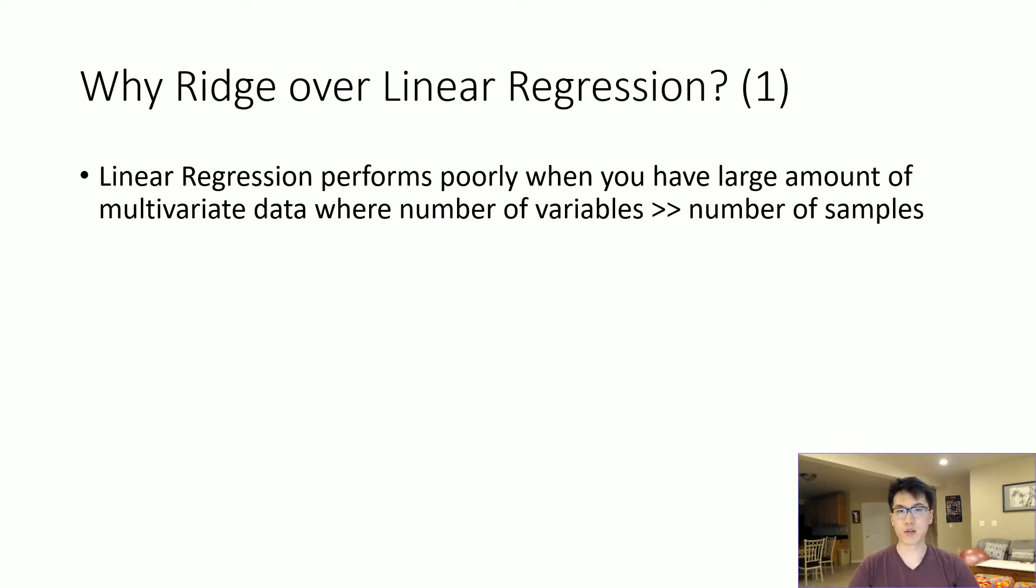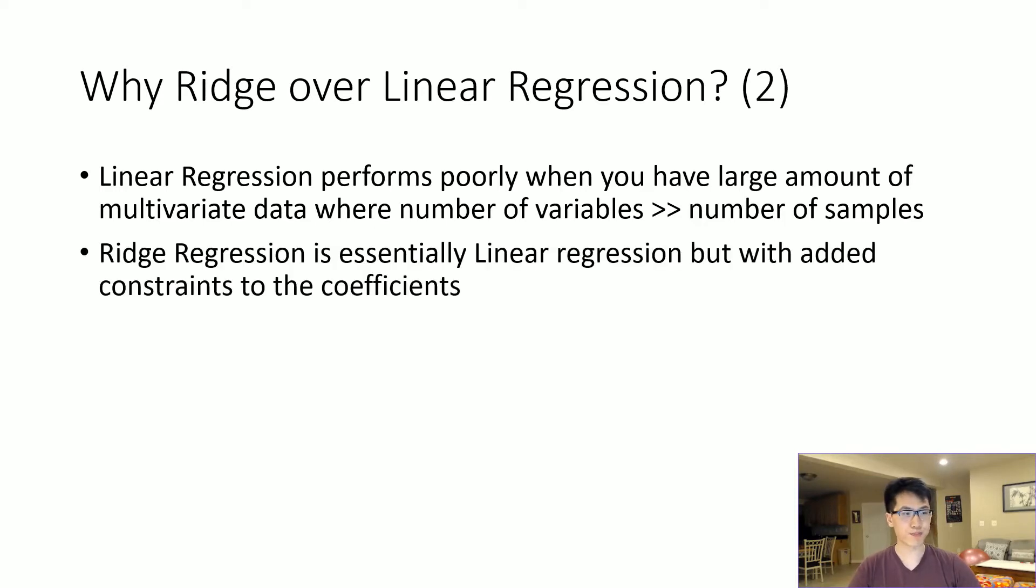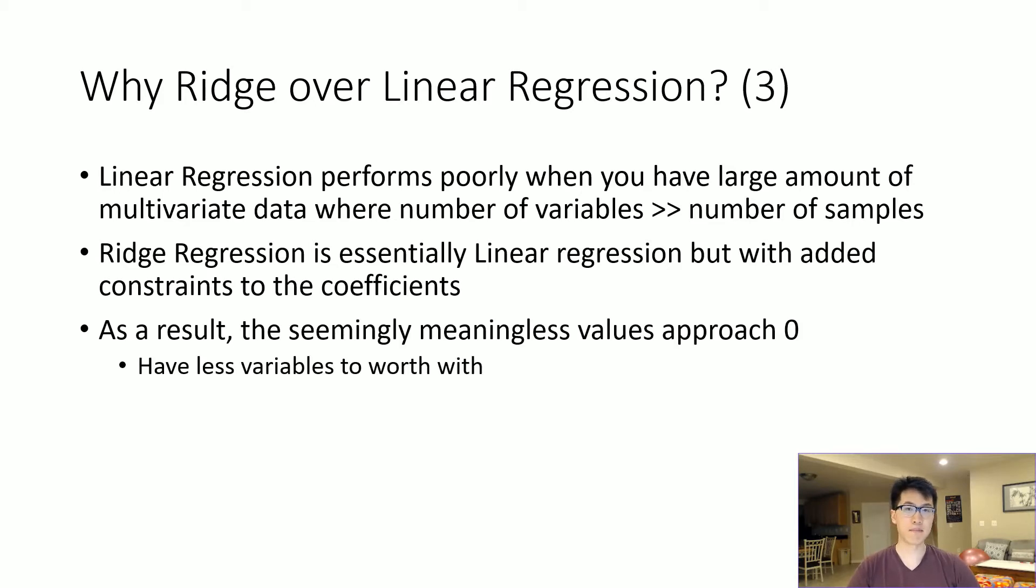Ridge regression is linear regression with an added constraint to the coefficients, meaning it will assign coefficient values close to zero or exactly zero to cancel out that specific coefficient or column. As a result, seemingly meaningless values approach zero and we have fewer variables to work with.